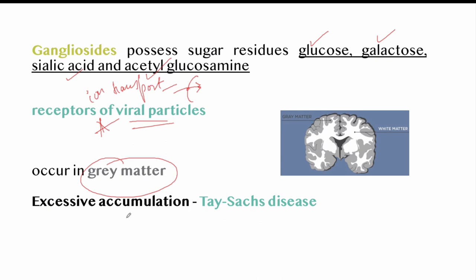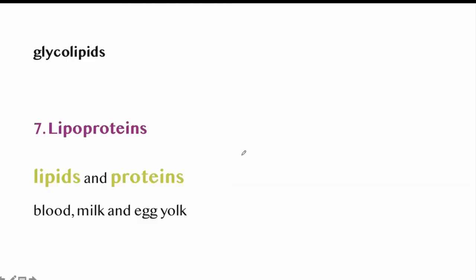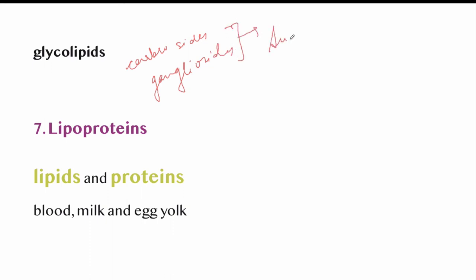Excessive accumulation of gangliosides produces a disorder known as Tay-Sachs disease. Both cerebrosides and gangliosides contain sugar residues — therefore they are known as glycolipids.